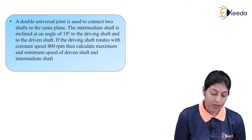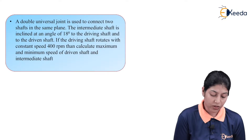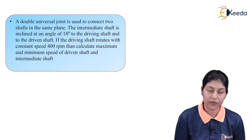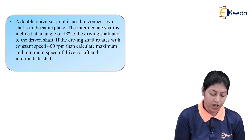If the driving shaft rotates with a constant speed of 400 RPM, then calculate the maximum and minimum speed of the driven shaft and the intermediate shaft.